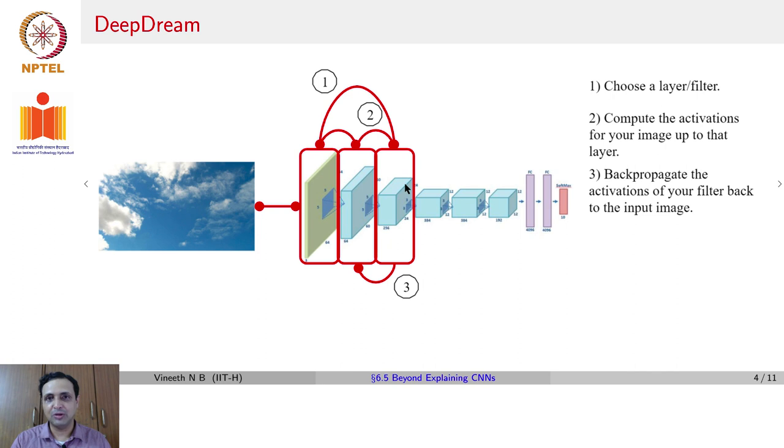Remember, we talked about, if you wanted to maximize a filter's activation, you set the gradient of only those filters to one, everything else to zero, and backprop to image and update the image using gradient ascent. You do the same thing here.